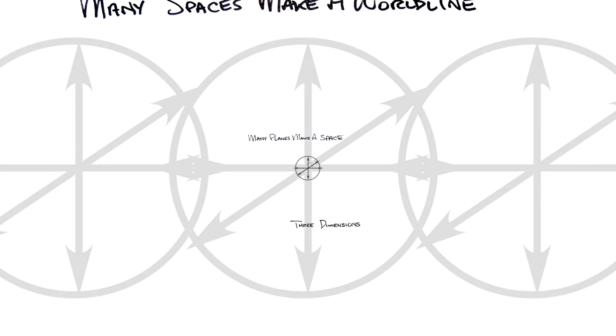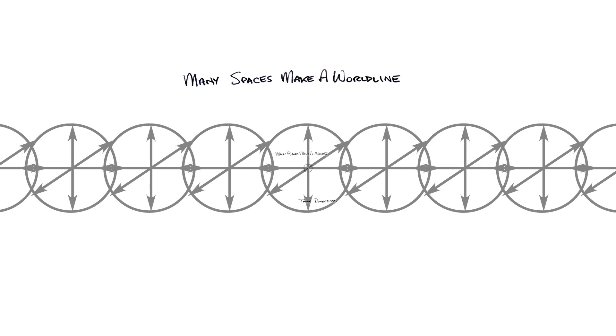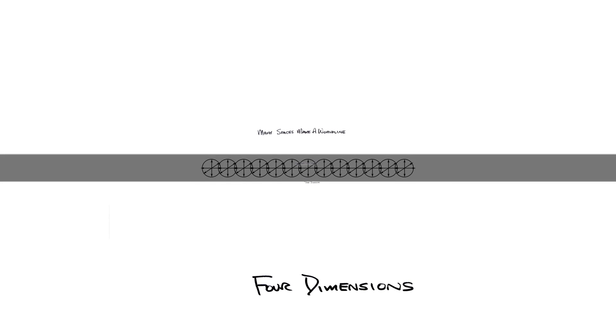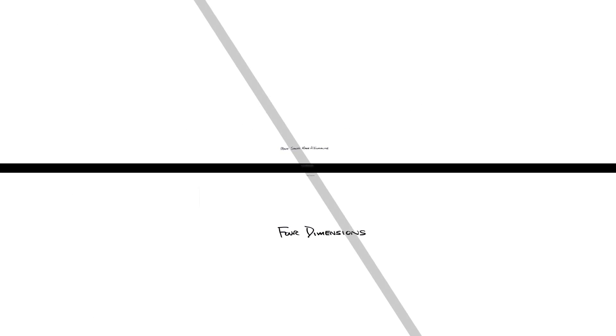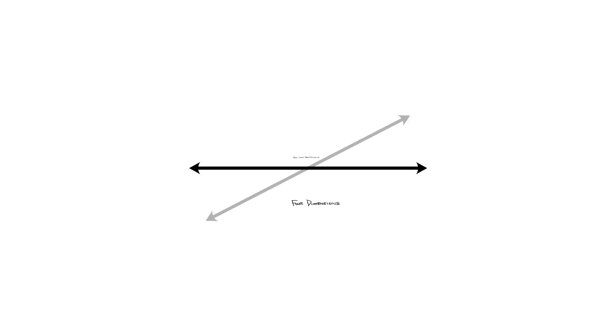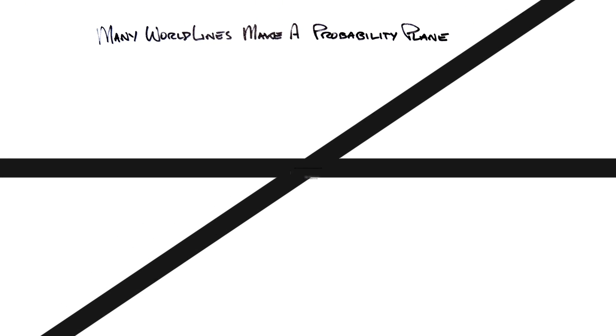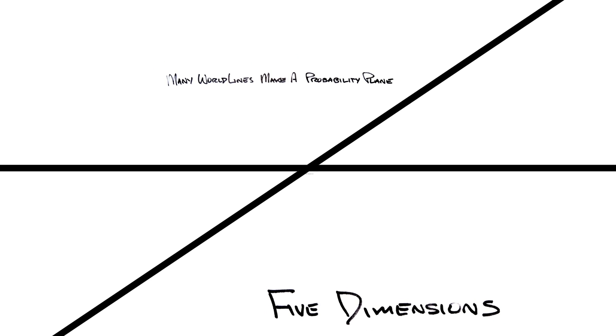Many frames of space make a world line, or some call this a Minkowski space, four dimensions. Do any one of these 4D world lines pass through every possible 3D frame? No, other world lines can be used to create a probability plane in five dimensions.